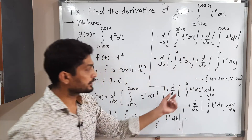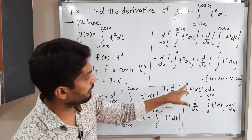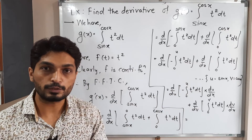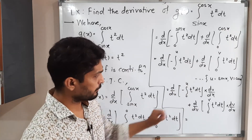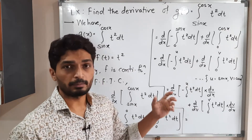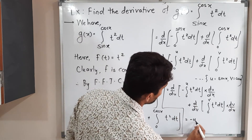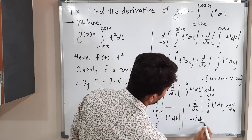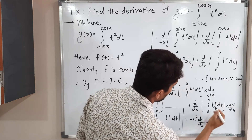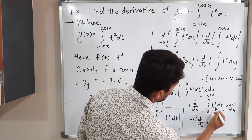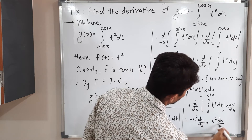Now the First Fundamental Theorem of Calculus is applicable since we are differentiating with respect to u and the upper limit is u. We simply replace the integrand evaluated at the upper limit. This gives: minus u squared times du/dx, plus v squared times dv/dx.